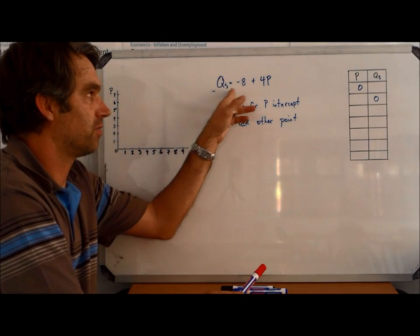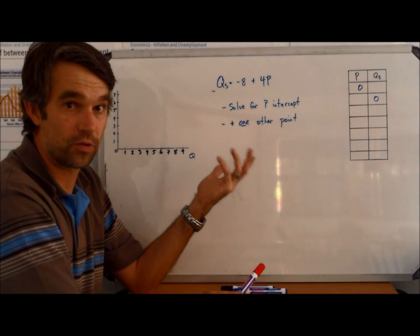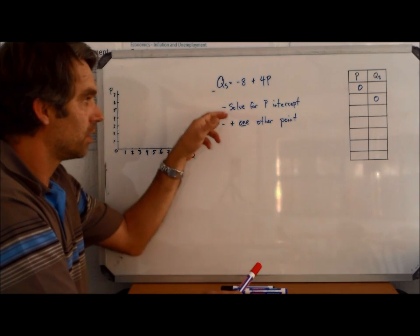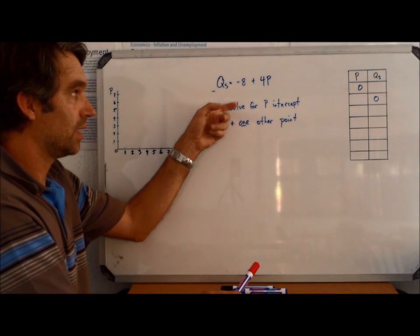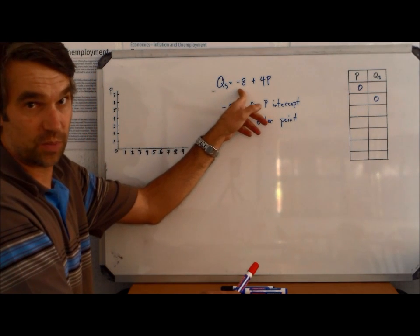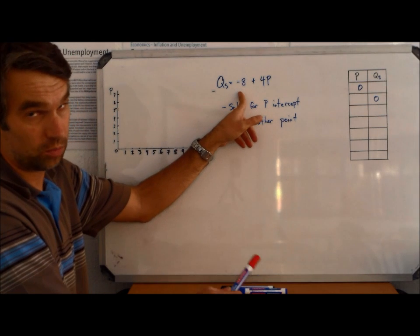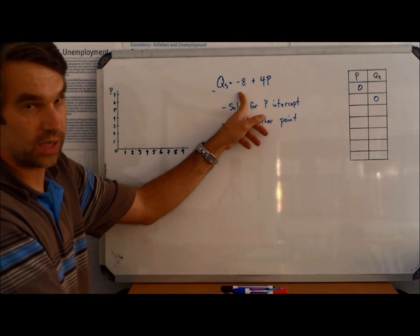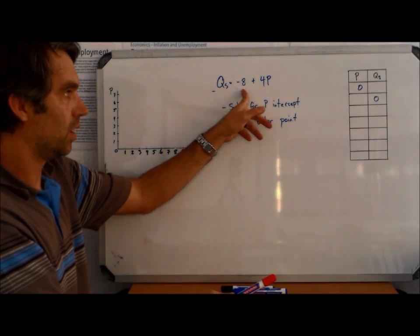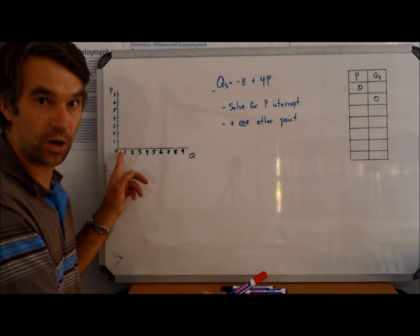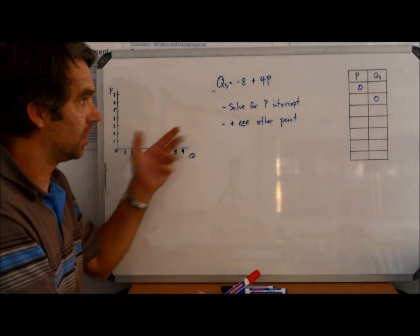Let's practice taking a function and plotting the curve from that function. The first thing we want to do is we want to solve for the P intercept. If that is positive for some reason, or if it's 0, or if it were 0, it just wouldn't be there. If this is positive or 0, well, then we can just go ahead and put it on the curve like we did with the demand function.